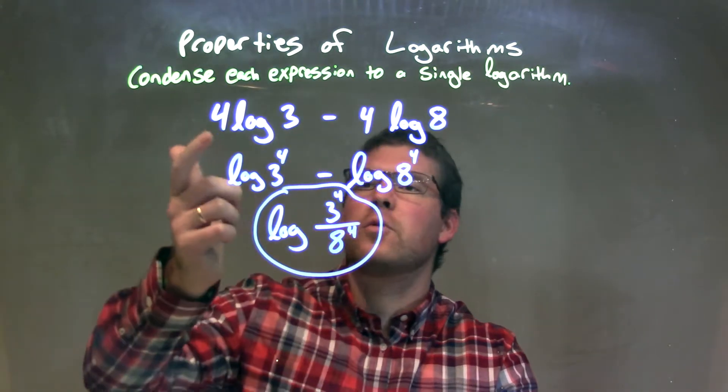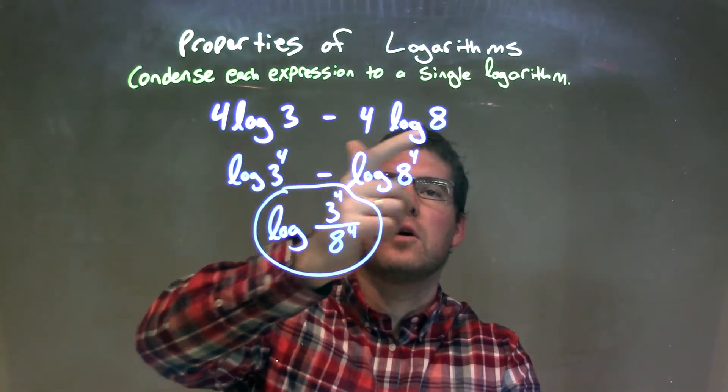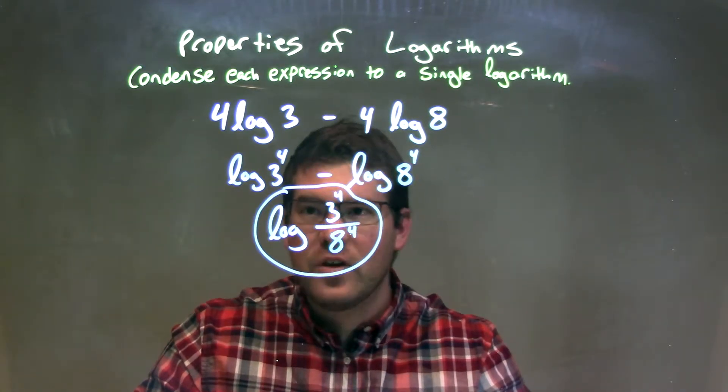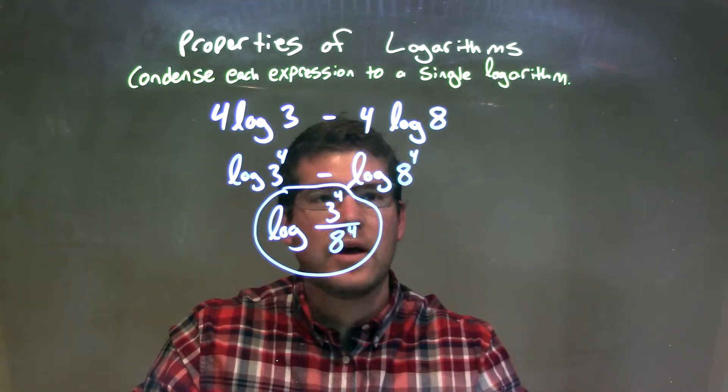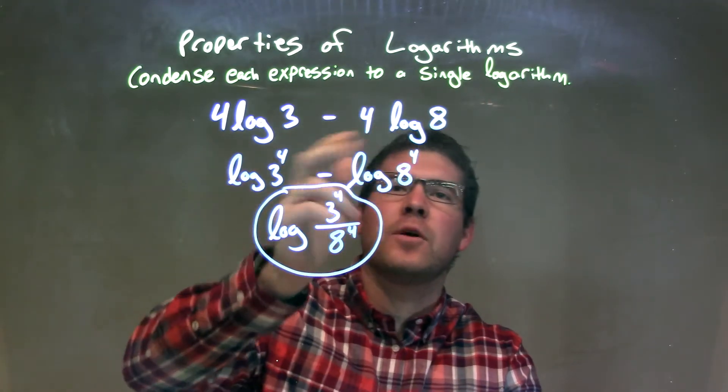Let's recap. We're given 4 log 3 minus 4 log 8, and we need to condense this. Well, the 4s become the exponents of each of the numbers, 3^4 and 8^4. Whatever is written out in front, we can put it as the exponent.